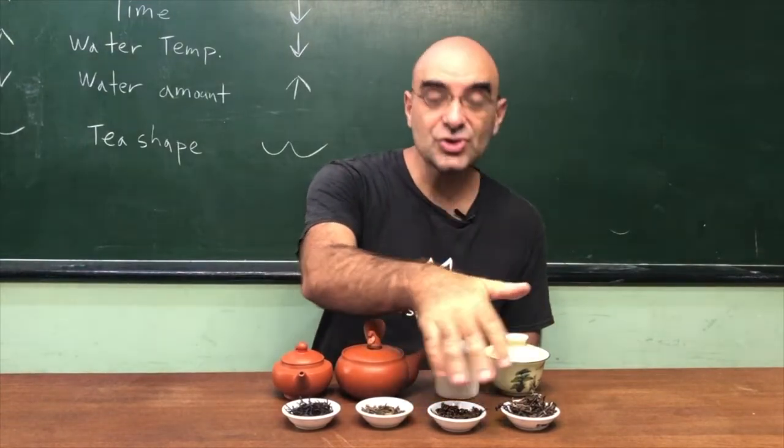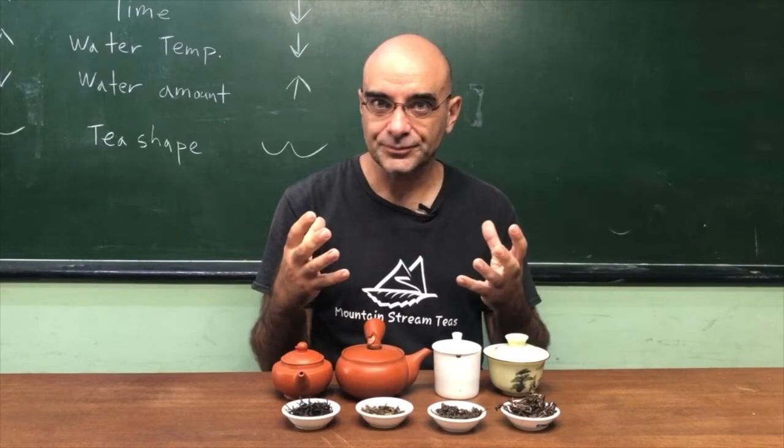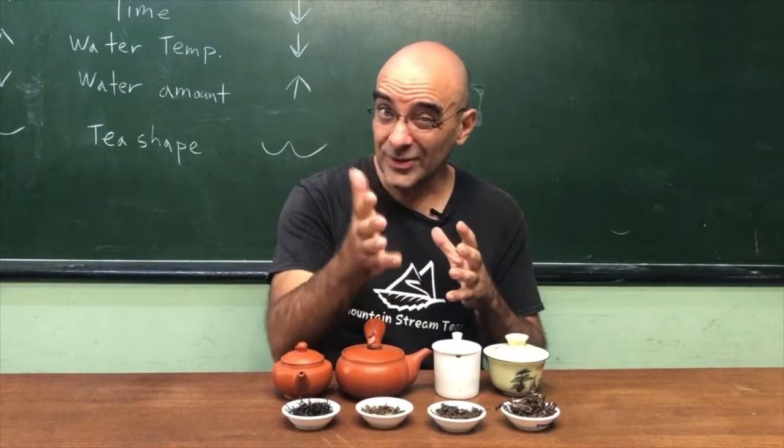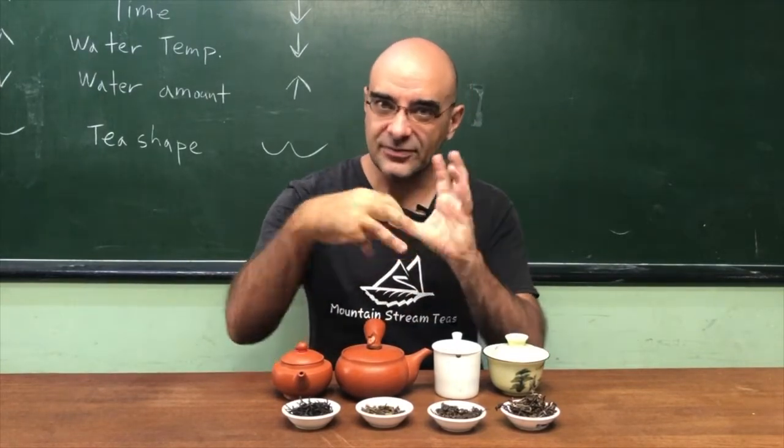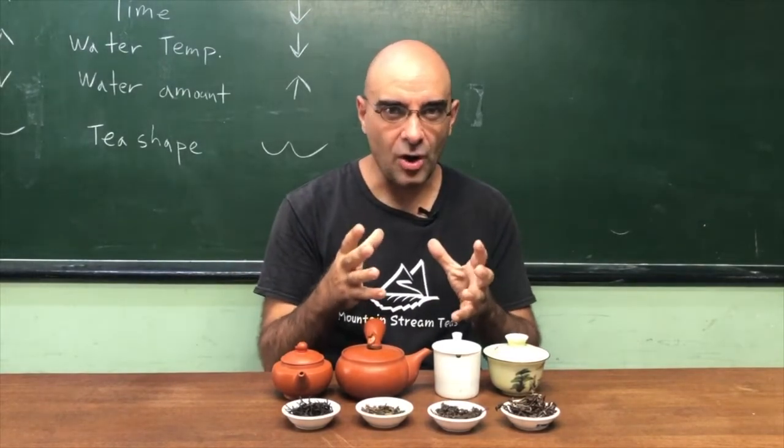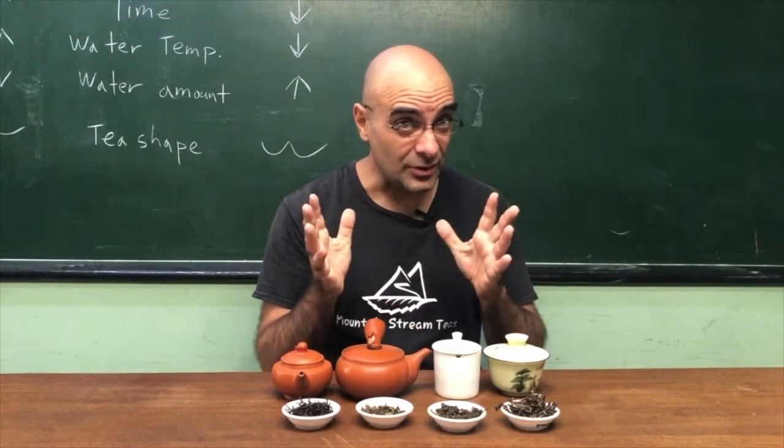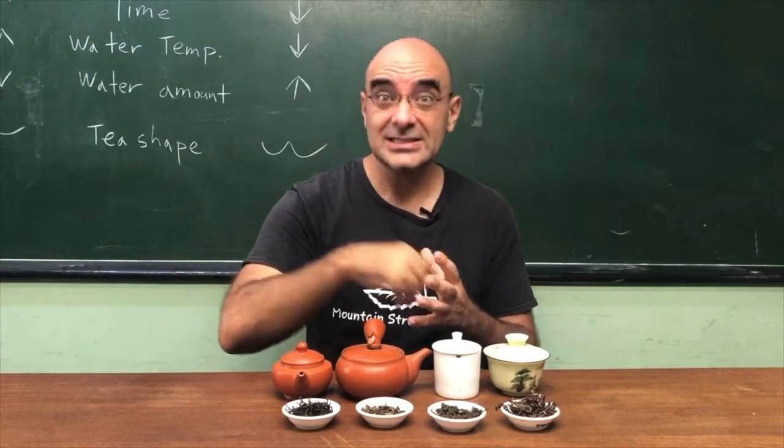And then with these teas, you can sort of see what's going on. As you can see more of the leaf, you're able to see that as you brew it, you've got to be a little bit more careful. Green tea is the perfect example of that. A good green tea, you can see the leaf, it's opened up. If you add a really hot water to that green tea, you're getting a lot of bitterness and astringency in general because more of the flavor is being released faster.